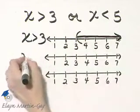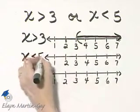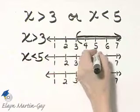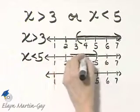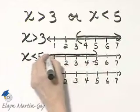On the second number line, we'll shade all numbers less than 5. So I'll draw a parenthesis at 5 and I'm shading all numbers less than 5.